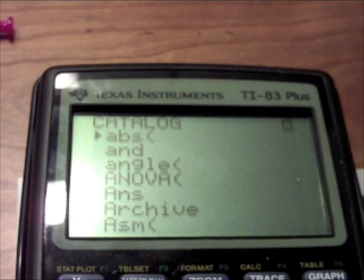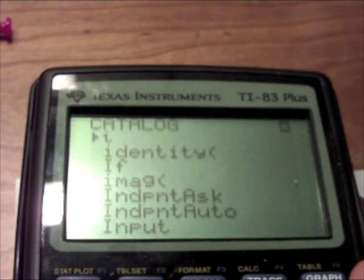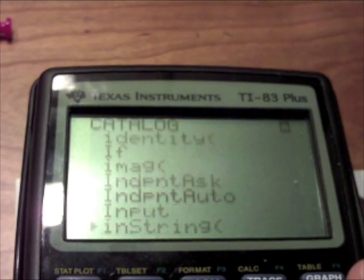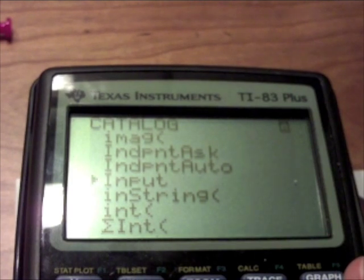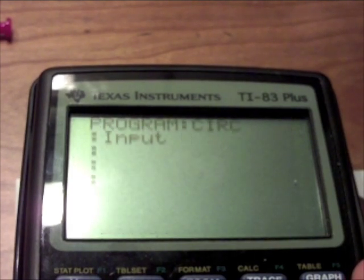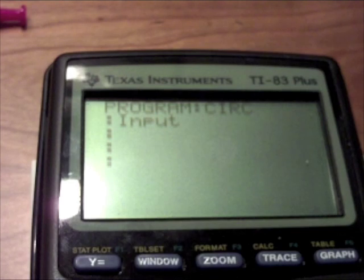It should be the zero key, catalog should be in yellow over it, so that's why you're doing second. Then click on x squared because you want it to go down to the I part, because you want to find the function called input. So once you get to the input function, it should be right above the instring function. Click on the input function, and then you need to input, then you need to put a variable, so you put input and then R, it's for the radius.